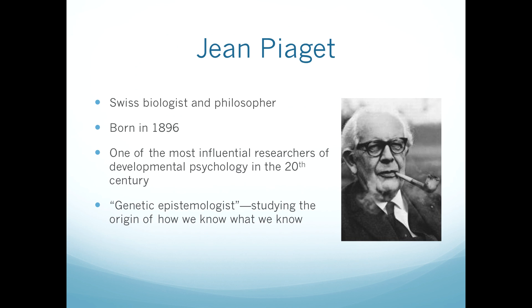Jean Piaget, born in 1896, was a Swiss biologist and philosopher who became one of the most influential researchers of developmental psychology during the 20th century. He considered himself a genetic epistemologist, wondering how we come to know what we know.